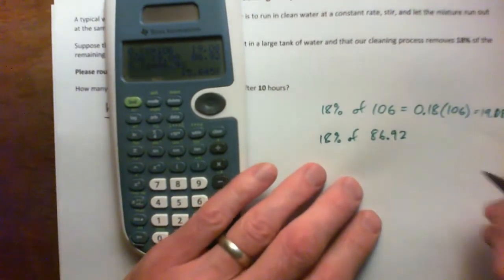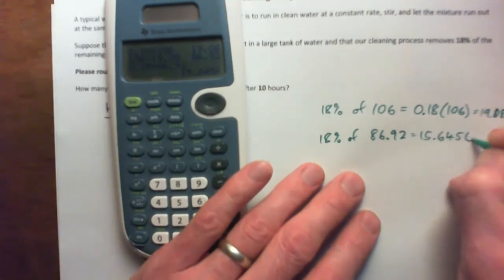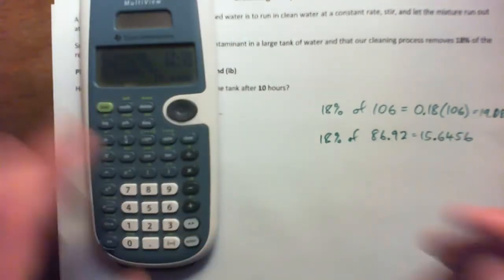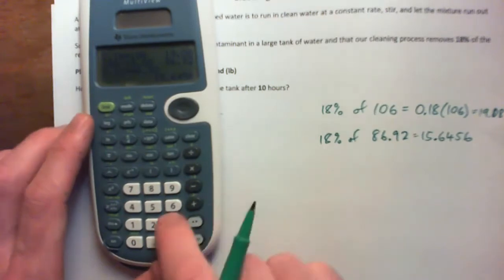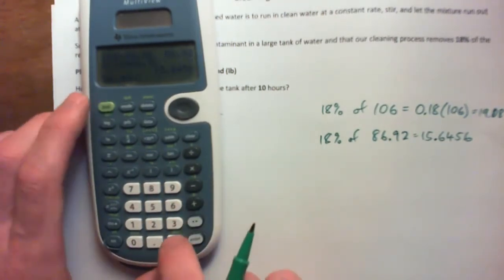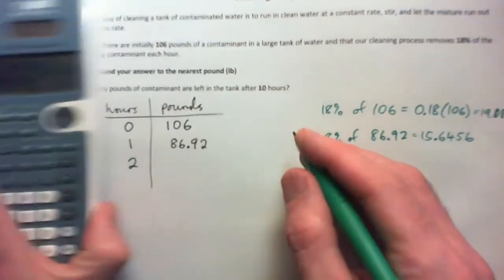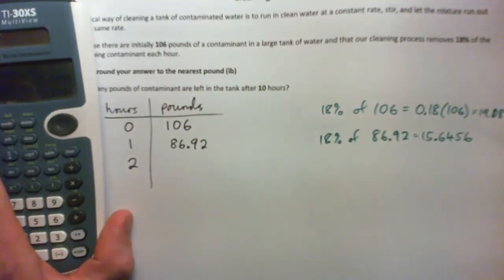And then we subtract that from the 86.92. So 86.92 minus second ans to get the answer up here. And that's 71.2744 and so on.